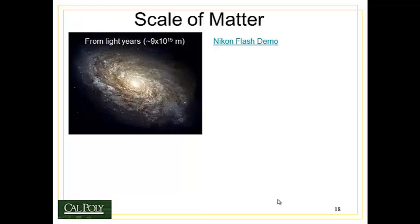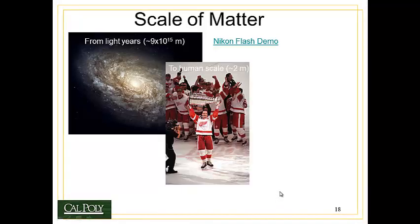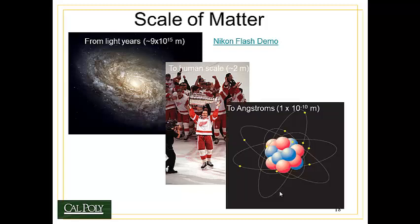To start off, we have to understand and appreciate just how small atoms really are. For example, if this were a class in cosmology, we'd be talking about light years, which are 9 times 10 to the 15th meters on the scales of galaxies and our universe. If we were designing automobiles, we'd be focused on the human scale, which is about 2 meters. But atoms themselves are on the order of what we call angstroms. An angstrom is defined as 1 times 10 to the minus 10th meters, and an individual atom is approximately 1.4 angstroms in diameter.